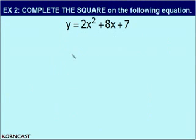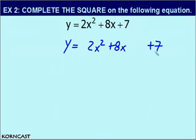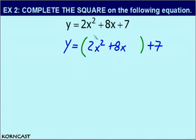Now let's complete the square on this equation. Step 1 is to kick out the constant term, which is 7. Now step 2 is to factor out the A term if necessary. The A term in this particular equation is 2, so we are going to have to factor out this 2. The reason why is we want to get a perfect square trinomial. The 2x squared is not a perfect square, so this part of our equation will never be a perfect square with 2x squared. If we factor out a 2, we'll be left with x squared, which is a perfect square, and then we can proceed.